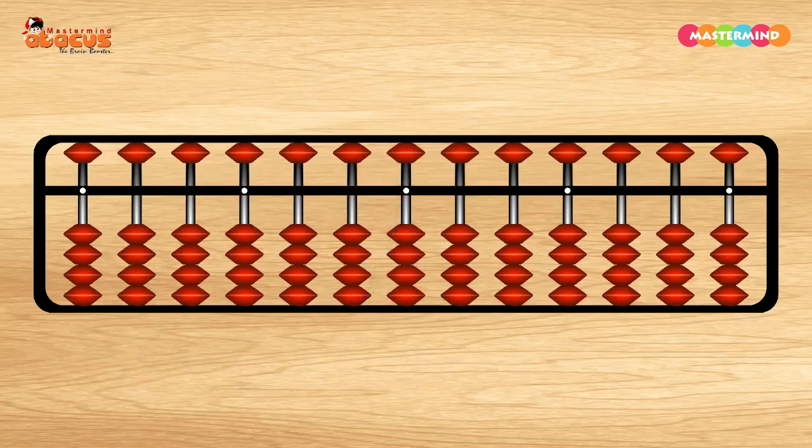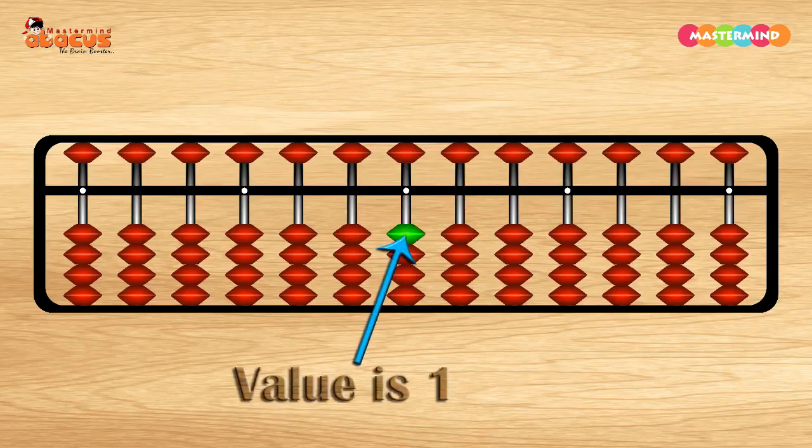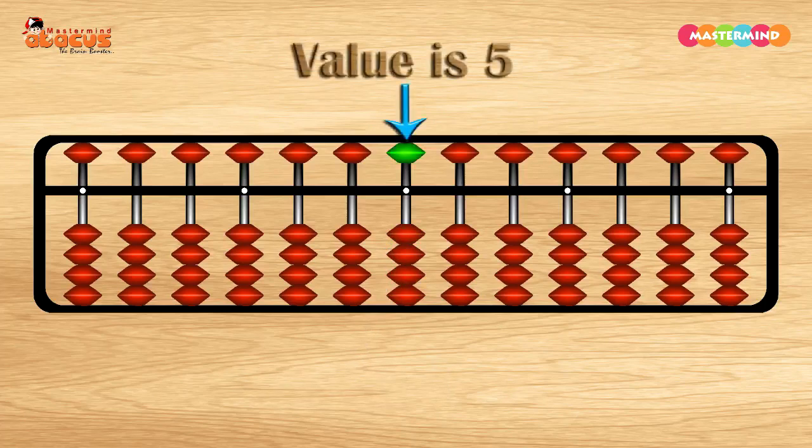The value of each Lower Deck's bead on the unit rod is 1. The value of Upper Deck's bead on the unit rod is 5.